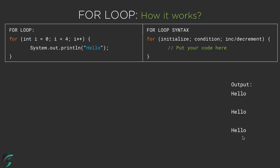Now, what exactly is happening and how does the for loop work? In order to print 'hello' 3 times, we have to make this for loop execute the println statement 3 times. So on the left hand side, we need to iterate the loop 3 times — loop 1, loop 2, and loop 3 — and after loop 3, the program should end. Let us explore what happens when this for loop is executed.